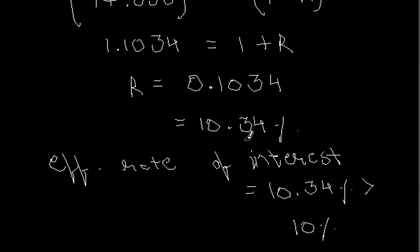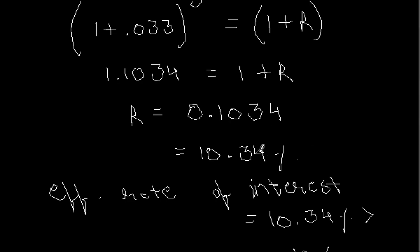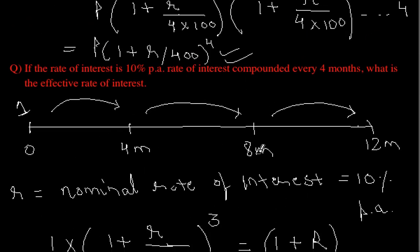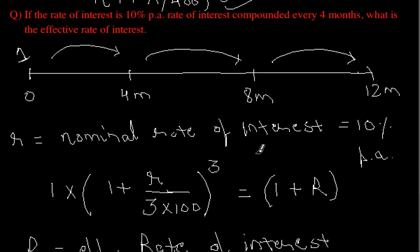The effective rate of interest, 10.34%, is greater than the nominal rate of interest of 10%, which is intuitive because we are compounding it three times in one year. More compounding means a greater effective rate. This is how we compute the effective rate of interest from the given nominal rate of interest.